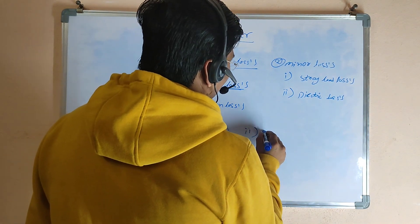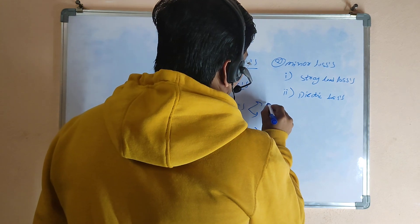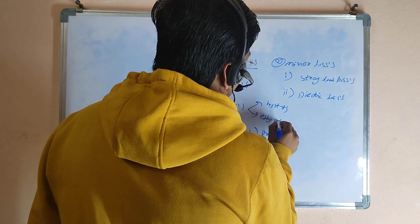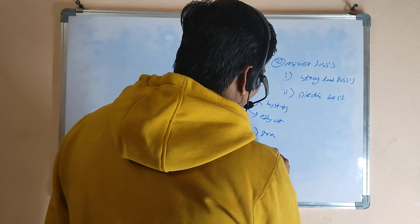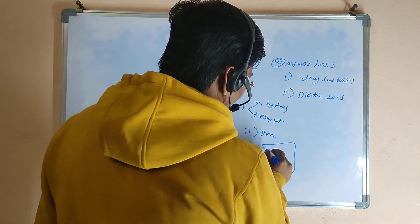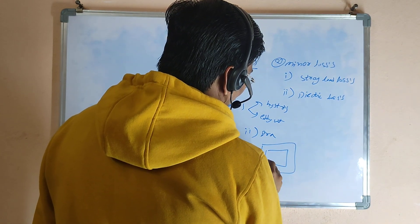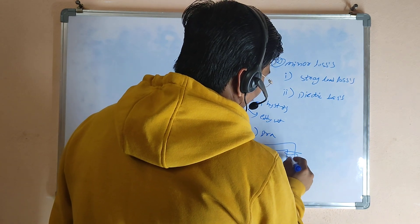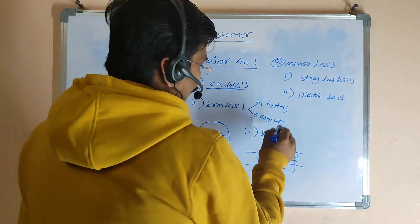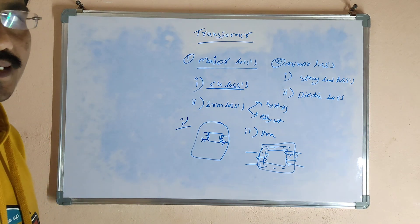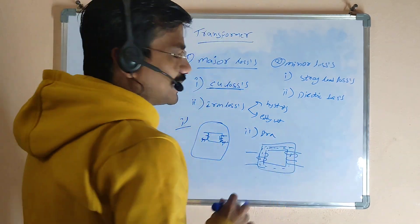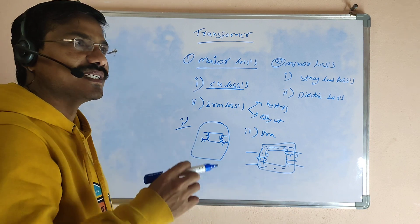The iron losses may be classified into two types: one is hysteresis losses and the second is eddy current losses. Both hysteresis losses and eddy current losses take place on the transformer core area. The core is made up of silica steel, which has a lower hysteresis coefficient, so the hysteresis losses are less.